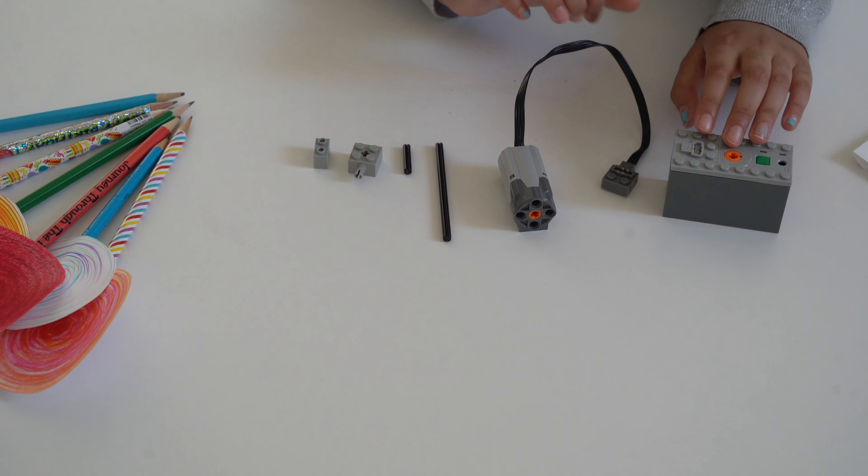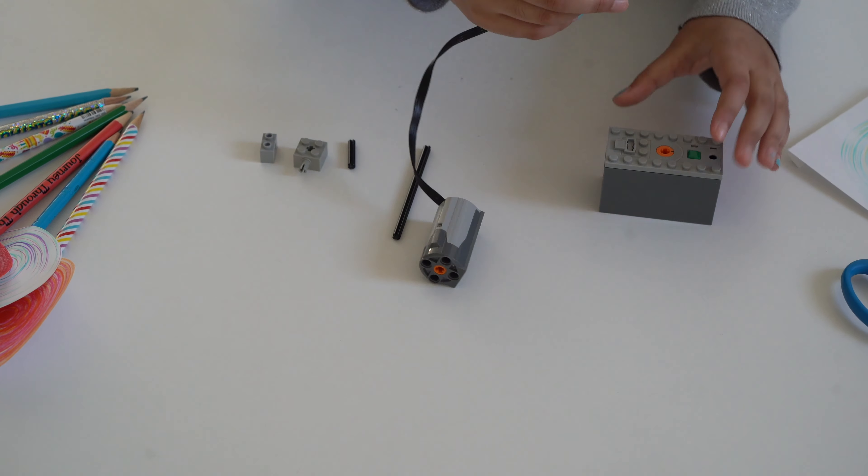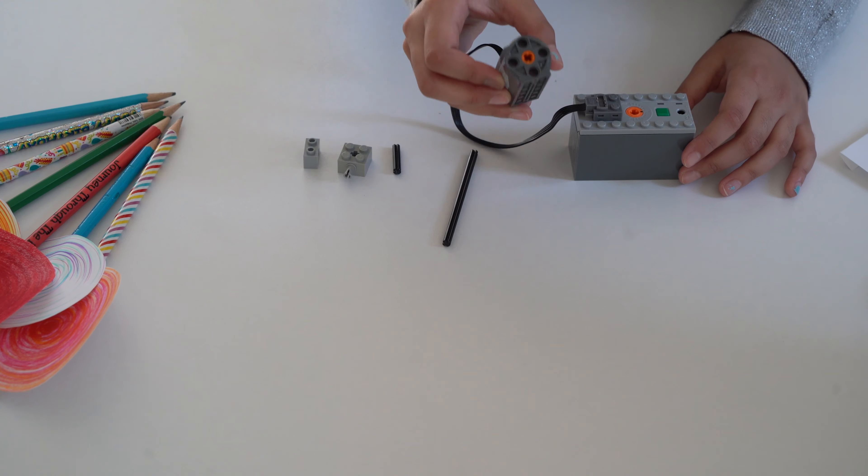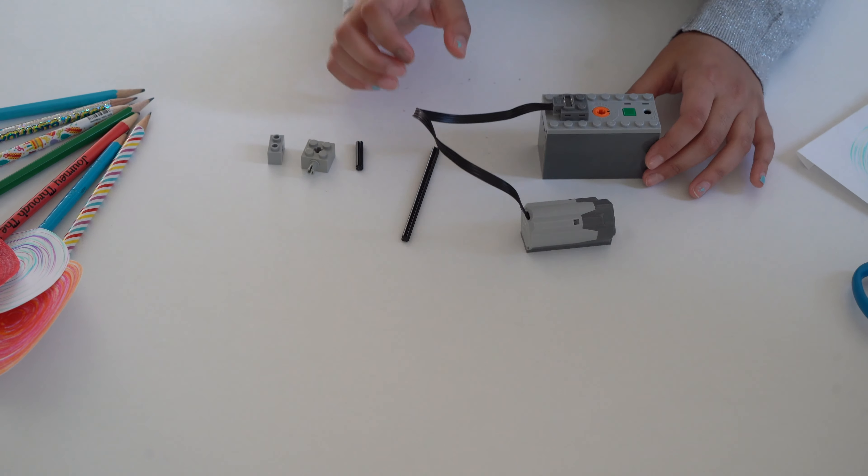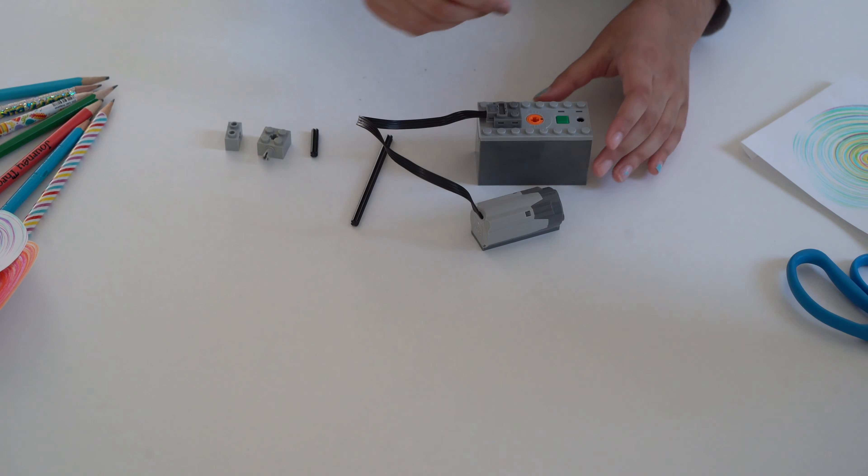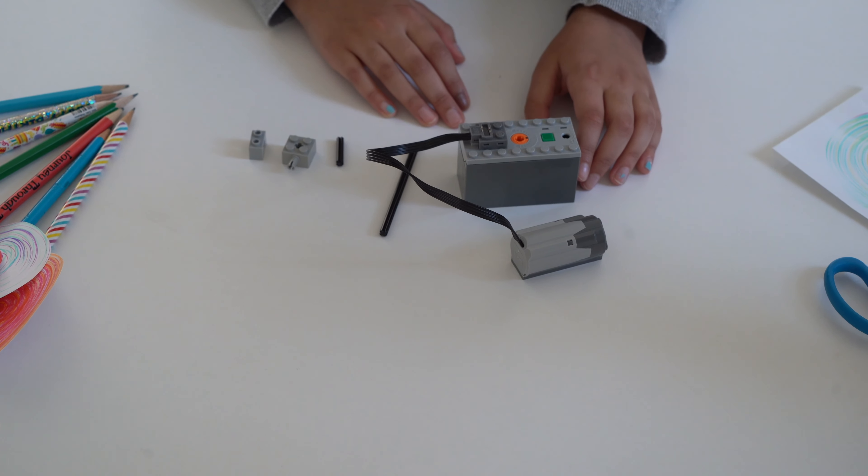First you put the end of the motor onto the battery pack. I'm using this Lego motor. Lego makes lots of different motors and you can connect different ones. The main idea is to make the paper spin.